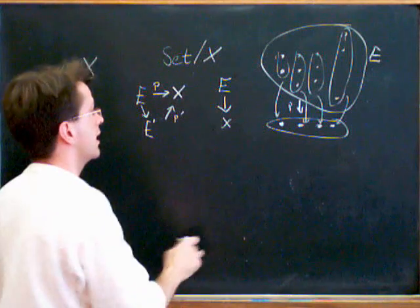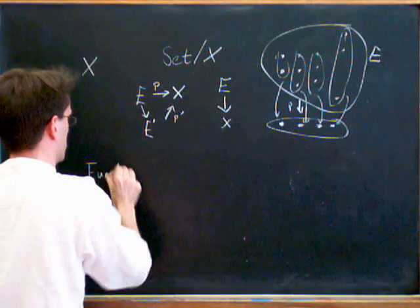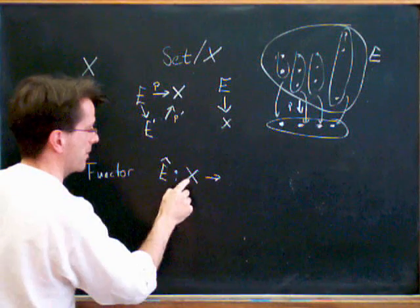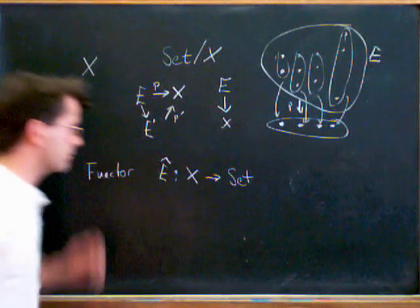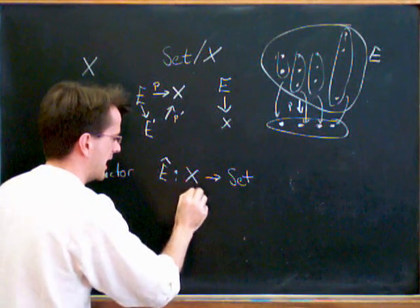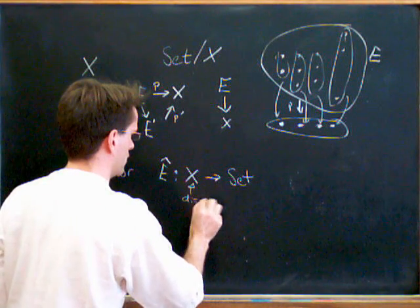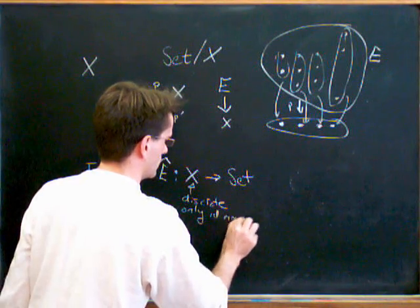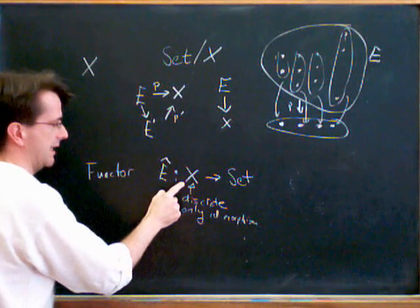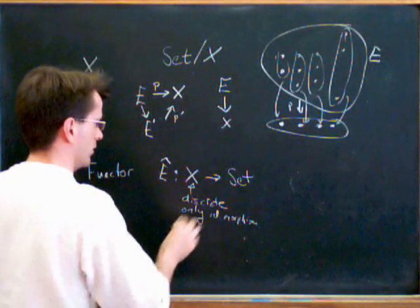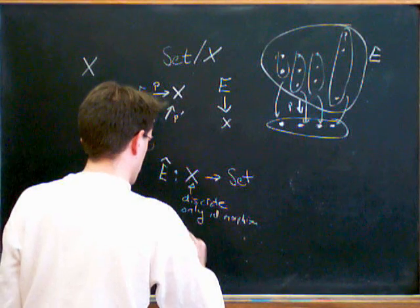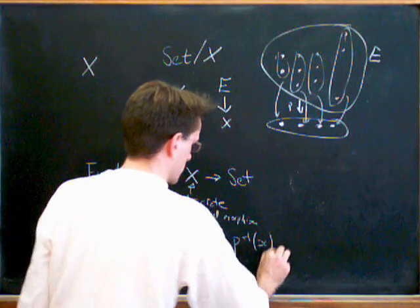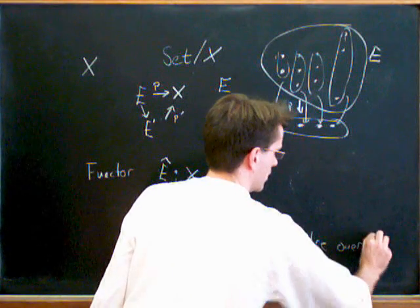So another way I can think of such a thing is as a functor. So let me just explain this. This is sort of equivalent to having a functor, which I'll call E hat, which goes from X into the category of sets. So by X being a category, I just mean this is a discrete category. Discrete, so this has only identity morphisms. So all I'm doing is to each object in X, i.e. each element of X, I'm associating a set. This would be defined by E hat of little x is equal to p inverse of x. So this is the fibre over x.